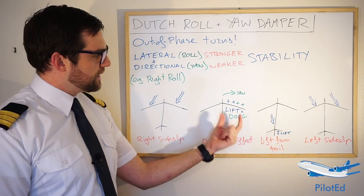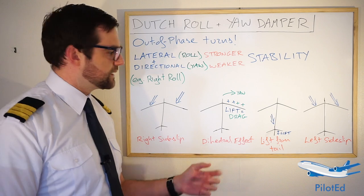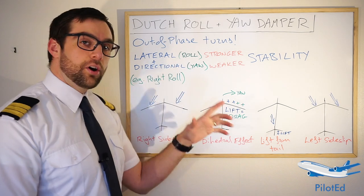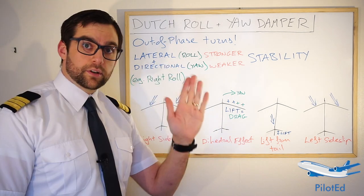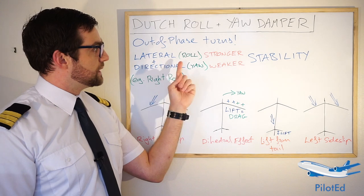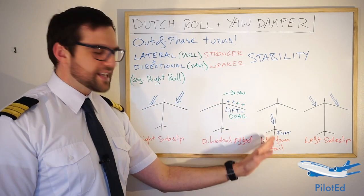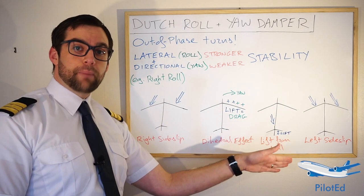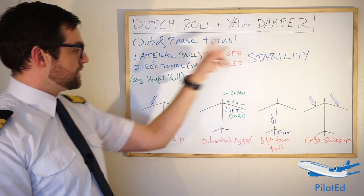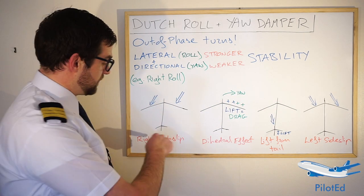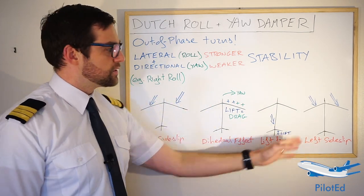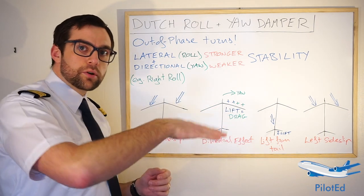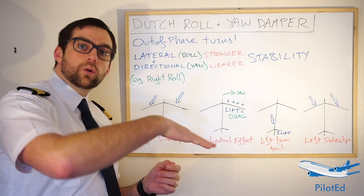This is where the problems arise. The aircraft tries to stabilize itself — as the right wing drops, the dihedral effect creates a little extra lift and tries to correct it. But on a big aircraft the wings are much more stable than the vertical stabilizer; lateral stability is much stronger than directional stability. So while the tail is trying to line up the nose, it causes an overbank to the left. If we bank left we get left sideslip, and you can see it's gone full circle — from right sideslip to left sideslip. That swinging, rolling motion is what's called Dutch roll, where the aircraft can't quite recover itself.